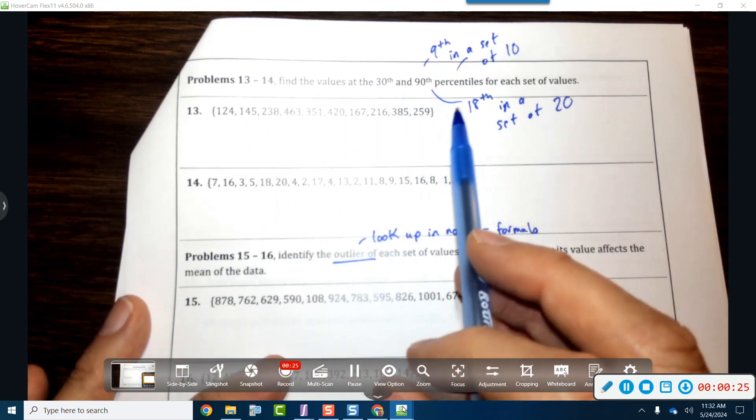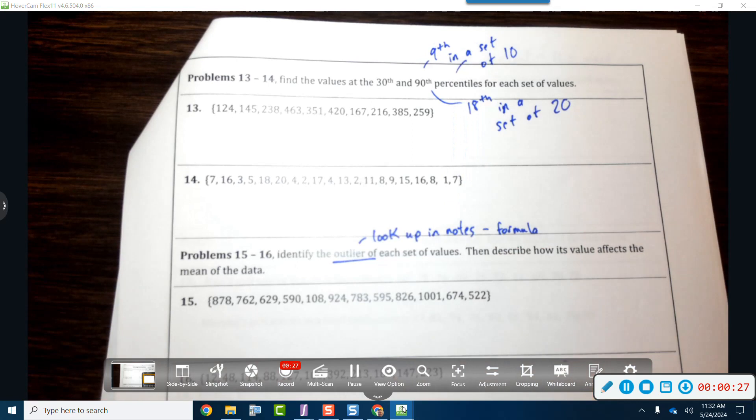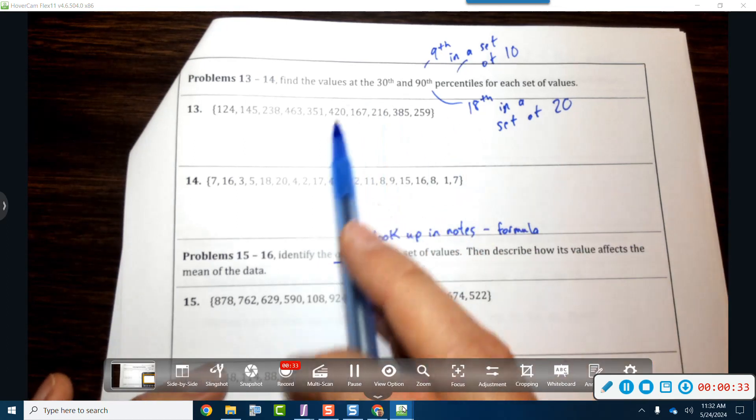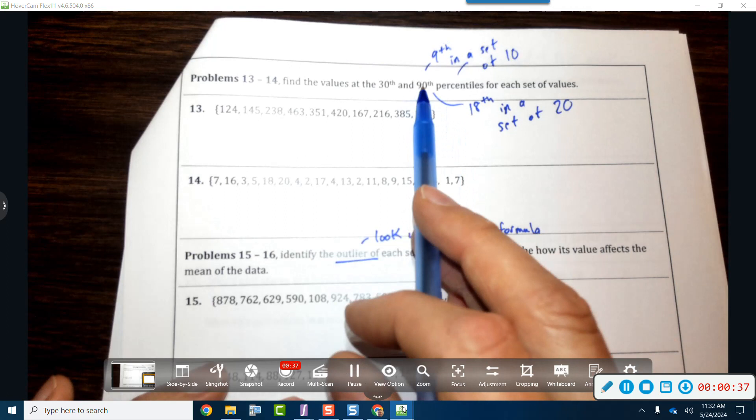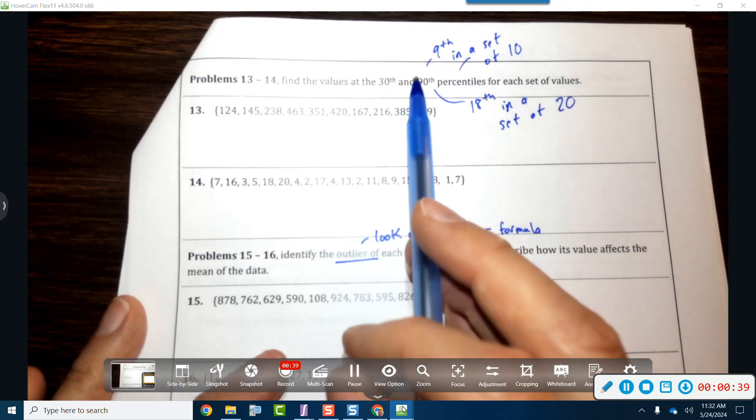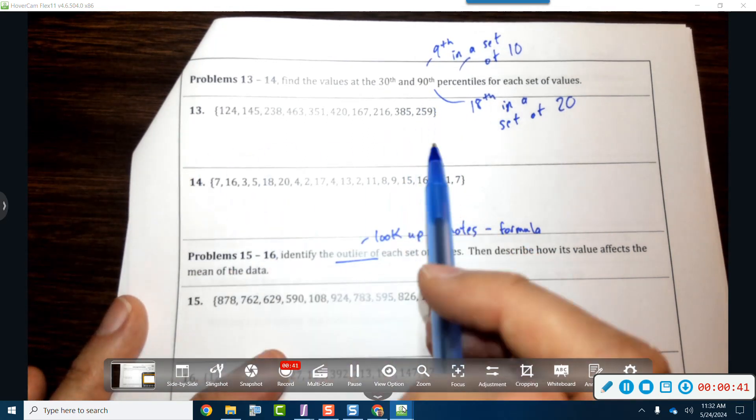So what you've got to do is you have to have an even number for these unless you're going to do some kind of crazy conversion, but we're not going to do that. If you have a set of 10, if you want to do the 90th percentile, you need to find the ninth part in your set of 10. They all need to be in order.